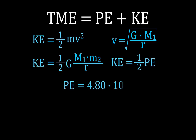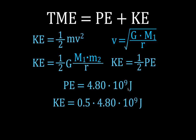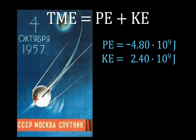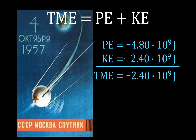So if I know the potential energy — which I already calculated as minus 4.80 times 10 to the ninth — for the kinetic energy we don't put the minus sign, because kinetic energy is not a vector. So I put down 4.80 times 10 to the ninth and multiply by one-half, giving a kinetic energy of 2.4 times 10 to the ninth joules. Now I just add the two values: potential energy is minus 4.80 times 10 to the ninth, kinetic energy is plus 2.4 times 10 to the ninth. The total mechanical energy of Sputnik is minus 2.4 times 10 to the ninth joules.